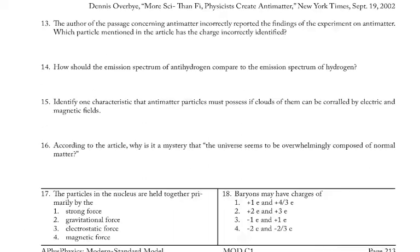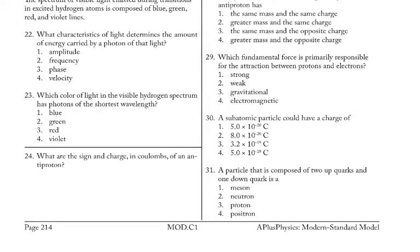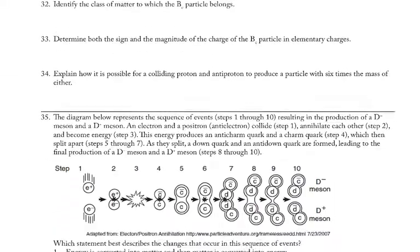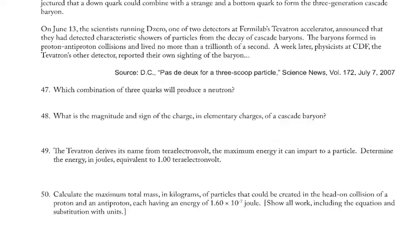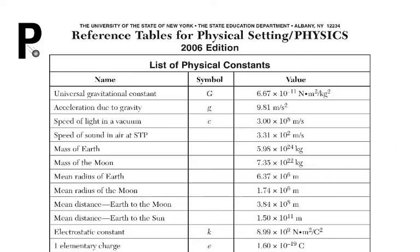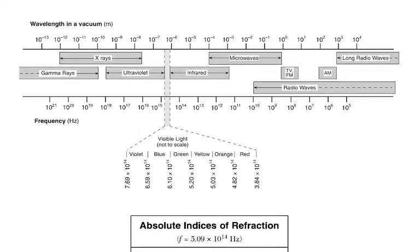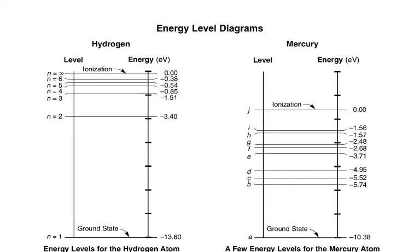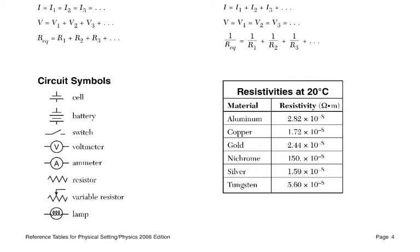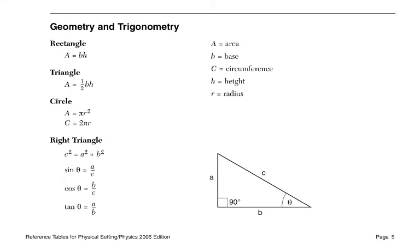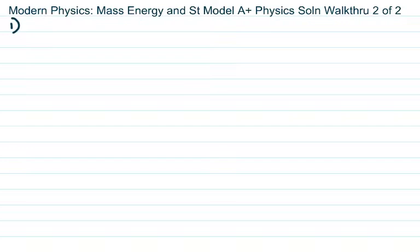Then we have page two, page three, and four, and five and six. Then you have page one of the reference tables, page one, page two, page three, page four, page five, page six. Alright, so let's get going.